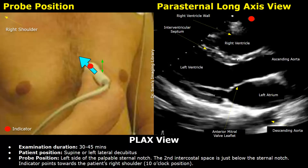The first view taken in echocardiography is the parasternal long axis view — a very important view. Place the patient in either the supine or left lateral decubitus position. Place the sector or phased array probe just to the left of the sternal notch. The sternal notch is palpable and easy to find. The second costal cartilage attaches to the sternal notch, and the second intercostal space is just below it, so you can start by placing the probe at this point.